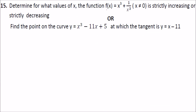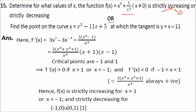Determine for what values of x the function f(x) = x³ + 1/x³ is strictly increasing or decreasing. So f'(x) is the derivative of x³ + 1/x³. You can rewrite it as 3 times (x⁶ minus 1) by x⁴. Using the difference of squares — a² minus b² — and further factoring x⁶ minus 1, you get the factored solution.